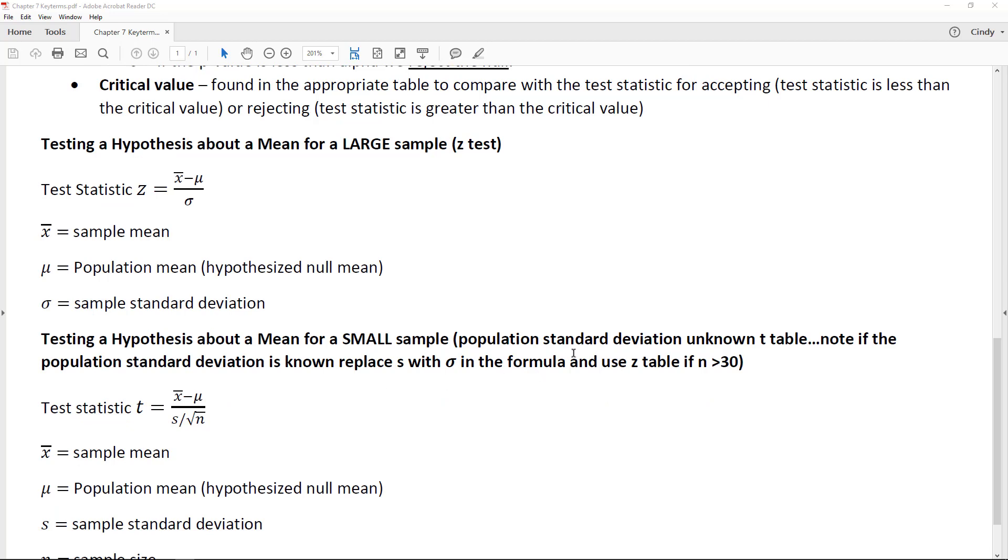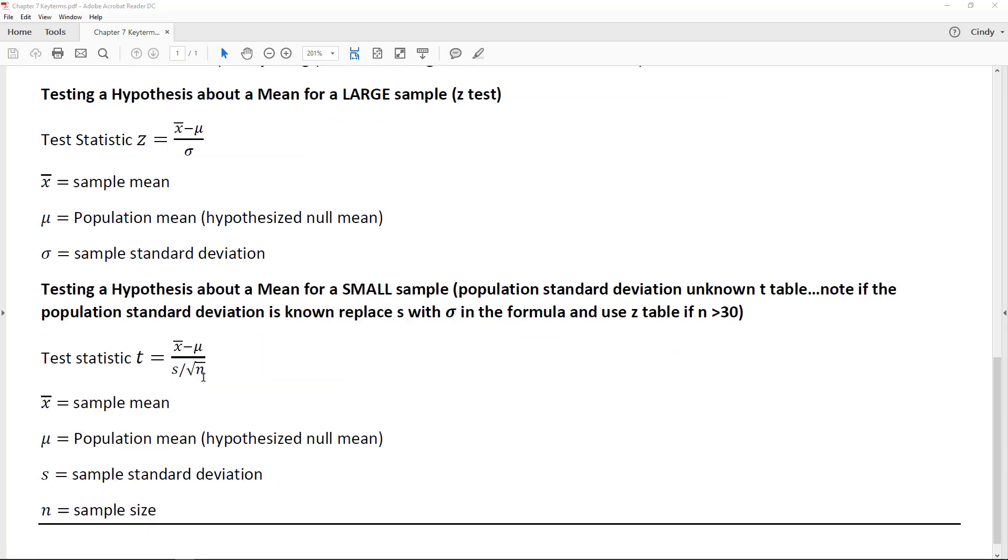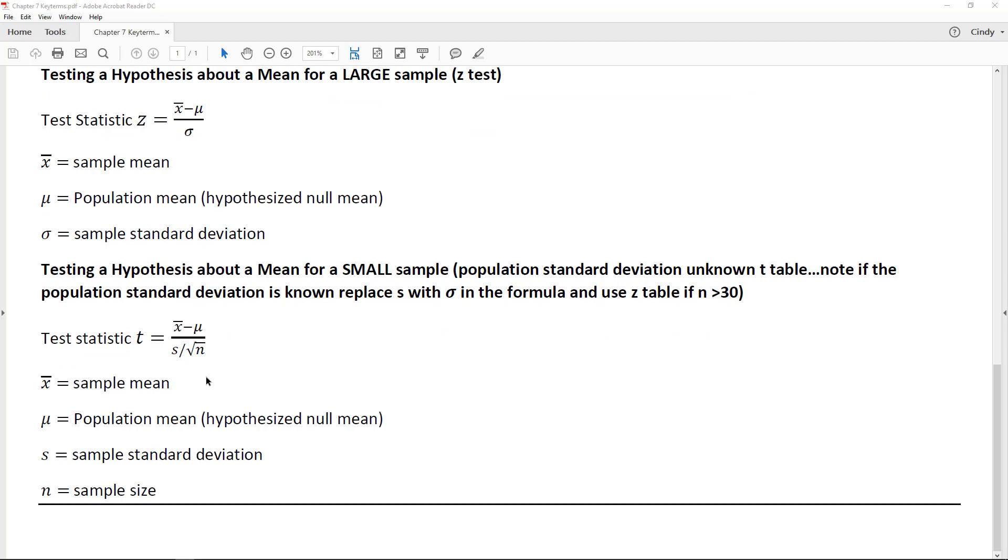so you have the sample standard deviation you can find, then you use the t-table. Your test statistic becomes the t, and we talked about this last chapter with confidence intervals—you would go look those values up in the t-table.